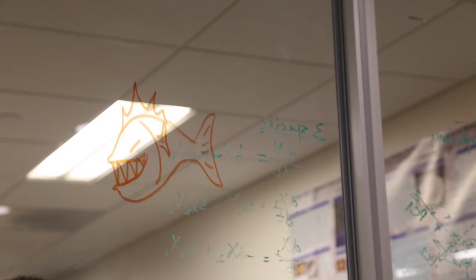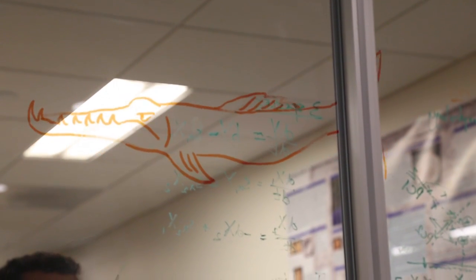Basically a food web is a map of all of the interactions, what we call the trophic interactions, in an ecosystem or community. And those are predator-prey interactions. Who eats whom? Who eats you? What do you eat?